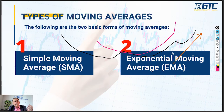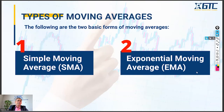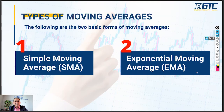As a short-term trader, we always have a preference towards EMA because EMA gives us better value, better presentation, and reacts faster. As a mid to long-term trader, we usually use SMAs.